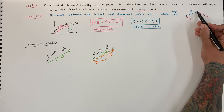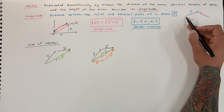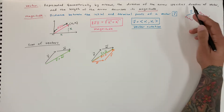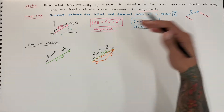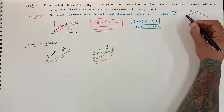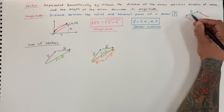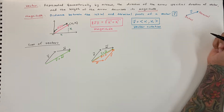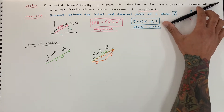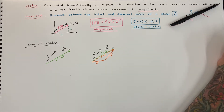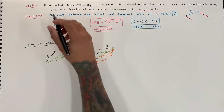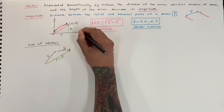So this arrow here is our vector. This is the initial point and the terminal point, and they can be located anywhere inside your 2D graph. The magnitude is the length or distance from the initial to the terminal point, and the direction of the vector specifies where it points.